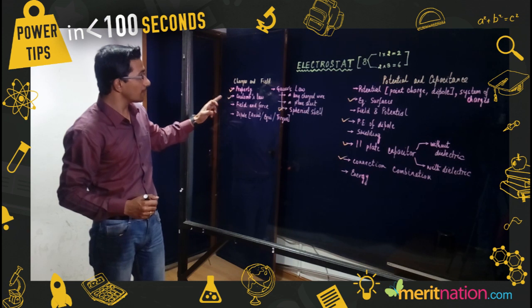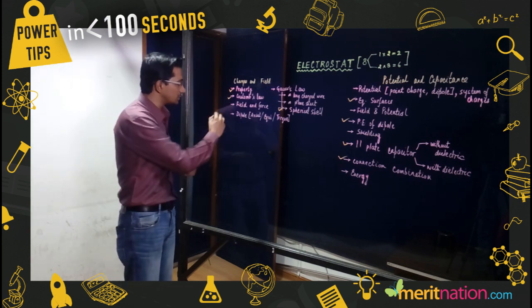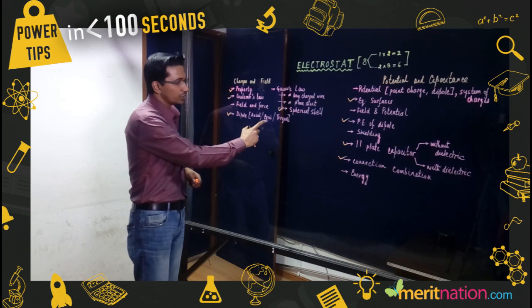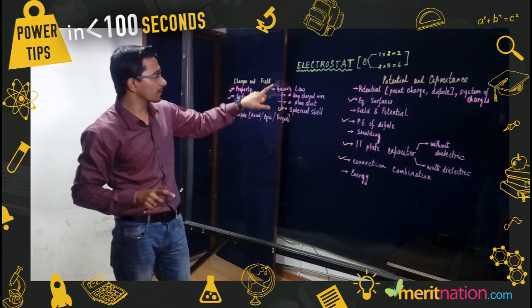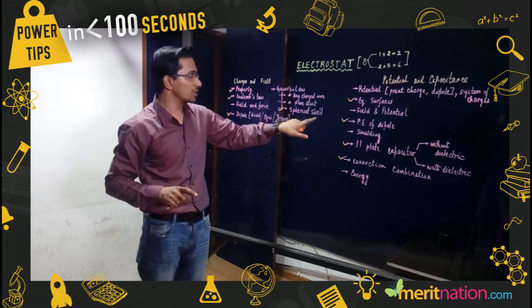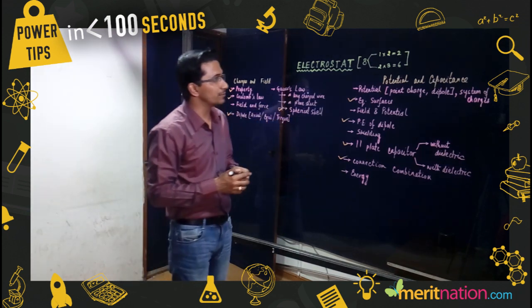Coulomb's law, dipole is very very important. You have to be clear about axial equatorial configuration and also the torque acting on the dipole. Gauss's law, spherical shell with respect to the graphical analysis is very very important.